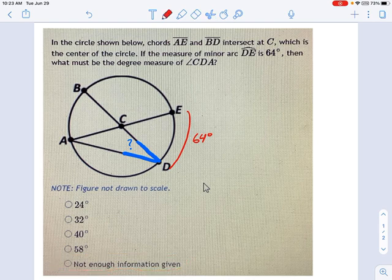If I have a minor arc DE of 64 degrees, that means this angle right here is 64 degrees. That's one of the properties of circles. Minor arcs correspond to the angles with the center point. If that angle is 64 degrees, because these are two intersecting lines, that means this opposite angle over here is 64 degrees. Those will always be equal.